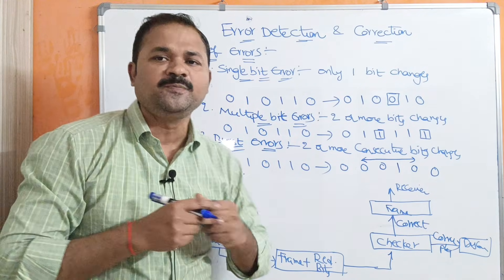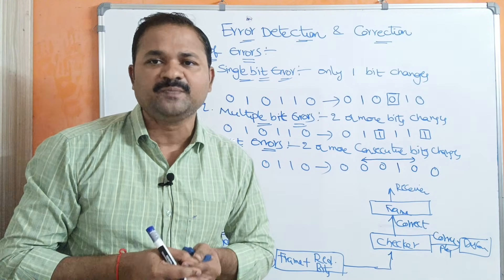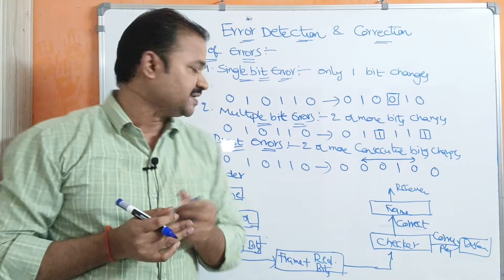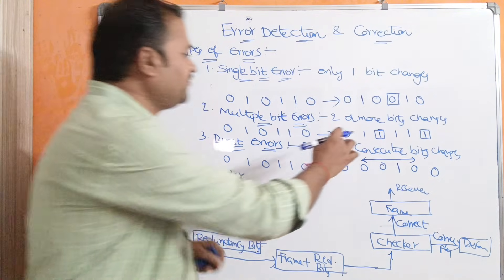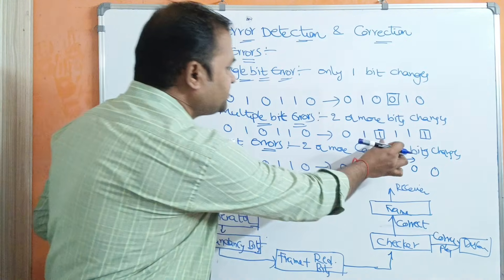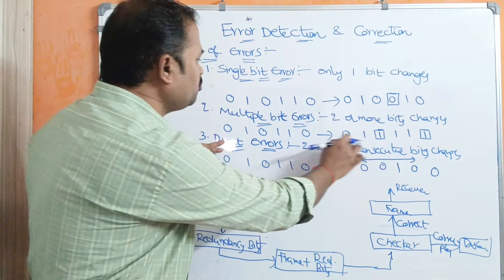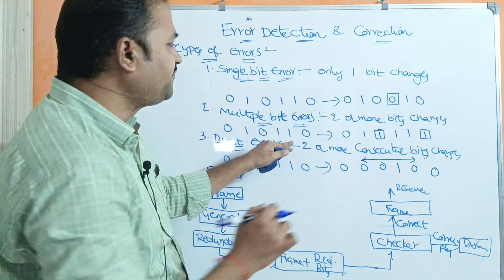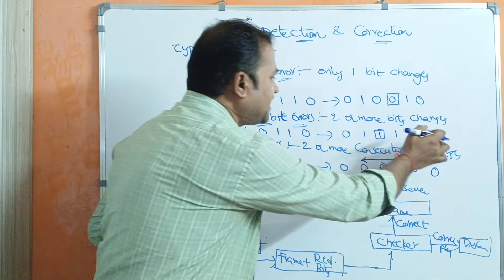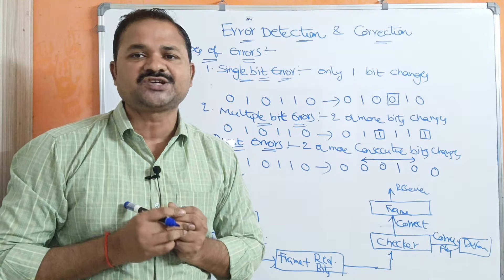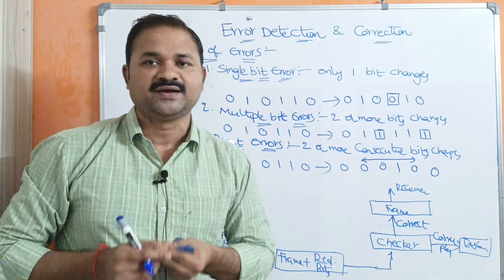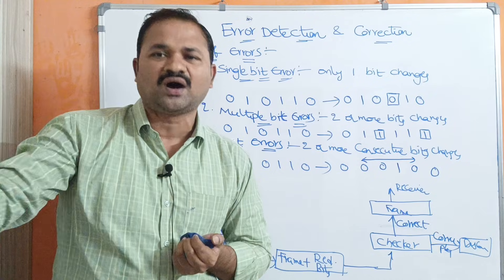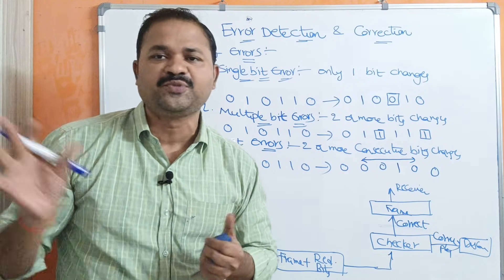The second type is multiple bit errors. Multiple means two or more, so two or more bits change. Let the sender send this message whereas the receiver receives this message. If we observe, the first two bits are same, whereas the third bit is changing from zero to one. The fourth and fifth bits are same, whereas the last bit is changing from zero to one. So this is called a multiple bit error — two or more bits will change.